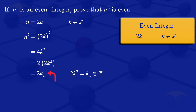So what we see now is that 2k2 is of the form of even integers. Therefore, we conclude that n squared is an even integer.